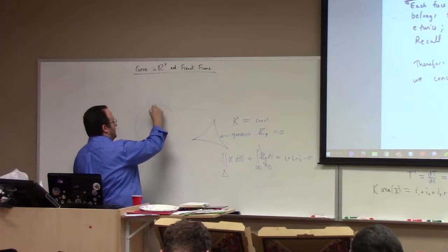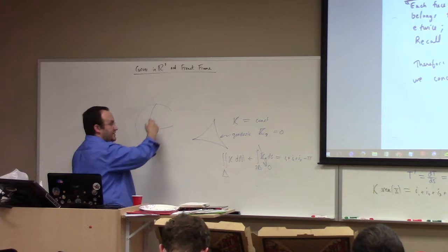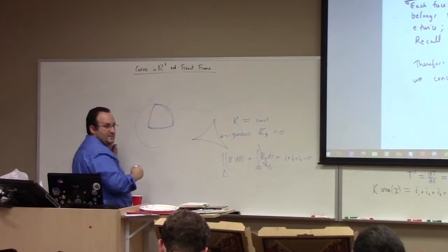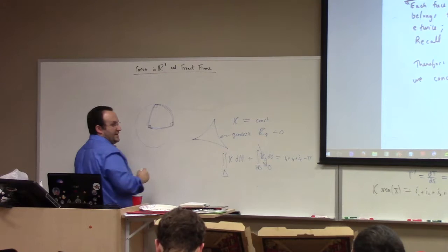You can form a nice geodesic triangle using two meridians and the equator. I believe those are all right angles.